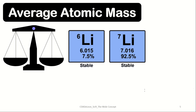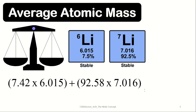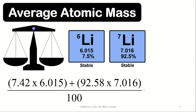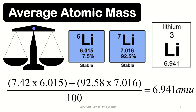We multiply the atomic mass of each isotope by its natural abundance percentage. Lithium-6 has a natural abundance of about 7.42% (roughly 7.5%) and an atomic mass of 6.015. Lithium-7 has a natural abundance of about 92.5% and an atomic mass of 7.016. We multiply each isotope's natural abundance by its atomic mass, add those together, and divide by 100% to get the average atomic mass — which gives us 6.941, the value listed in the periodic table.